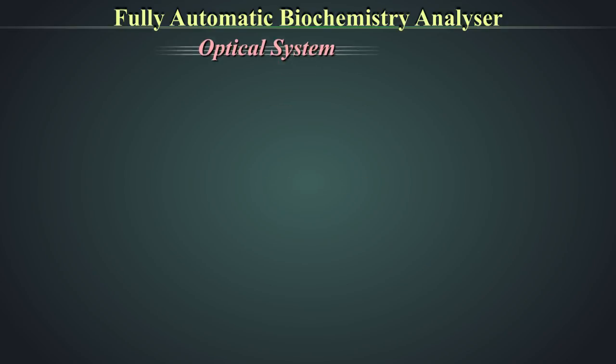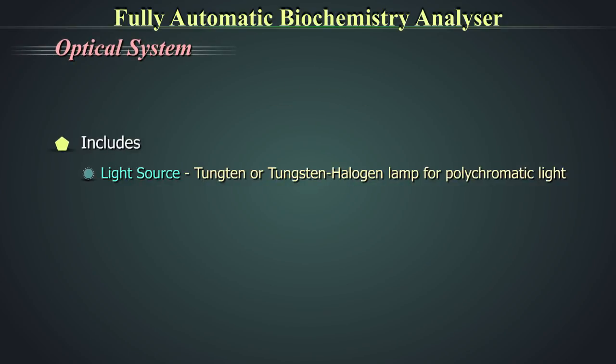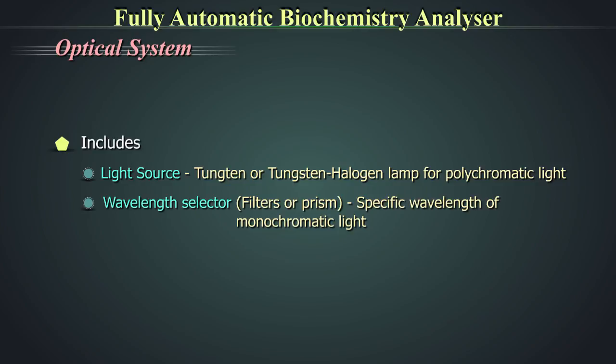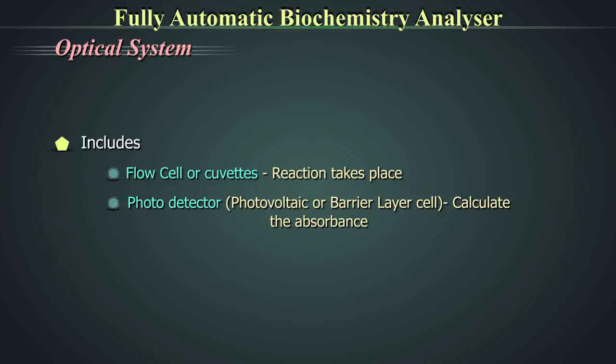The optical system includes the light source, which is a tungsten or tungsten halogen lamp for polychromatic light, a wavelength selector like filters or prism to give a specific wavelength of monochromatic light, a flow cell or cuvette where reactions take place, and a photodetector in the form of a photovoltaic or barrier layer cell which calculates the absorbance.